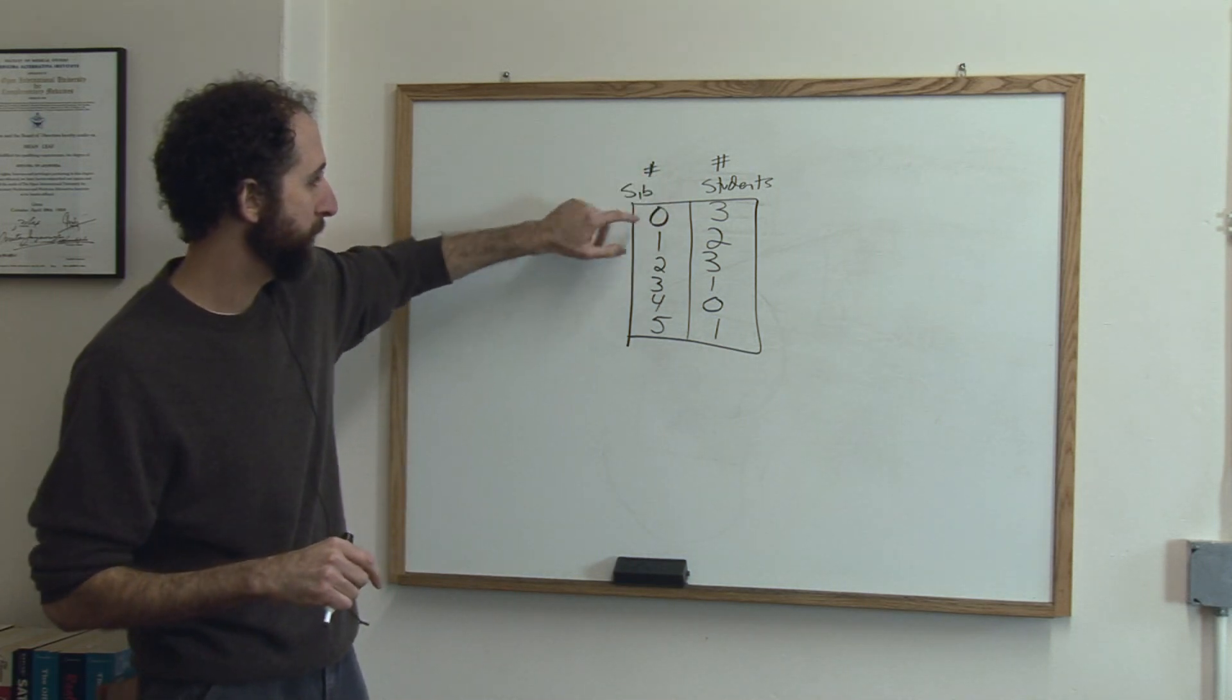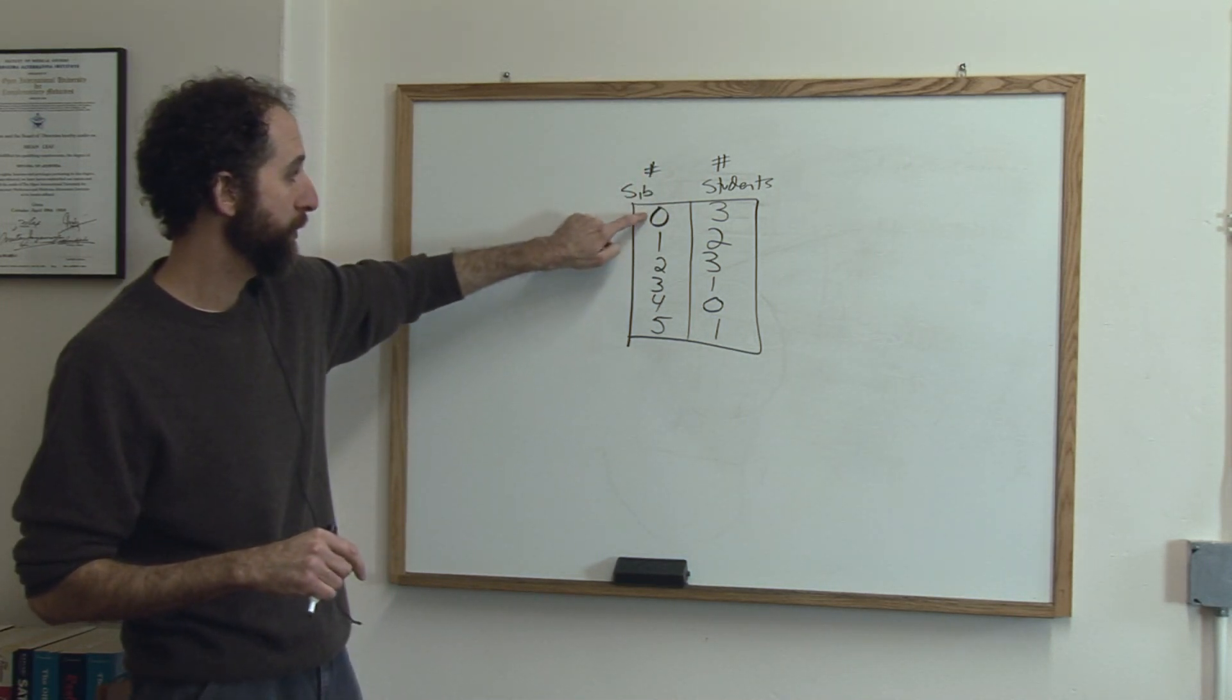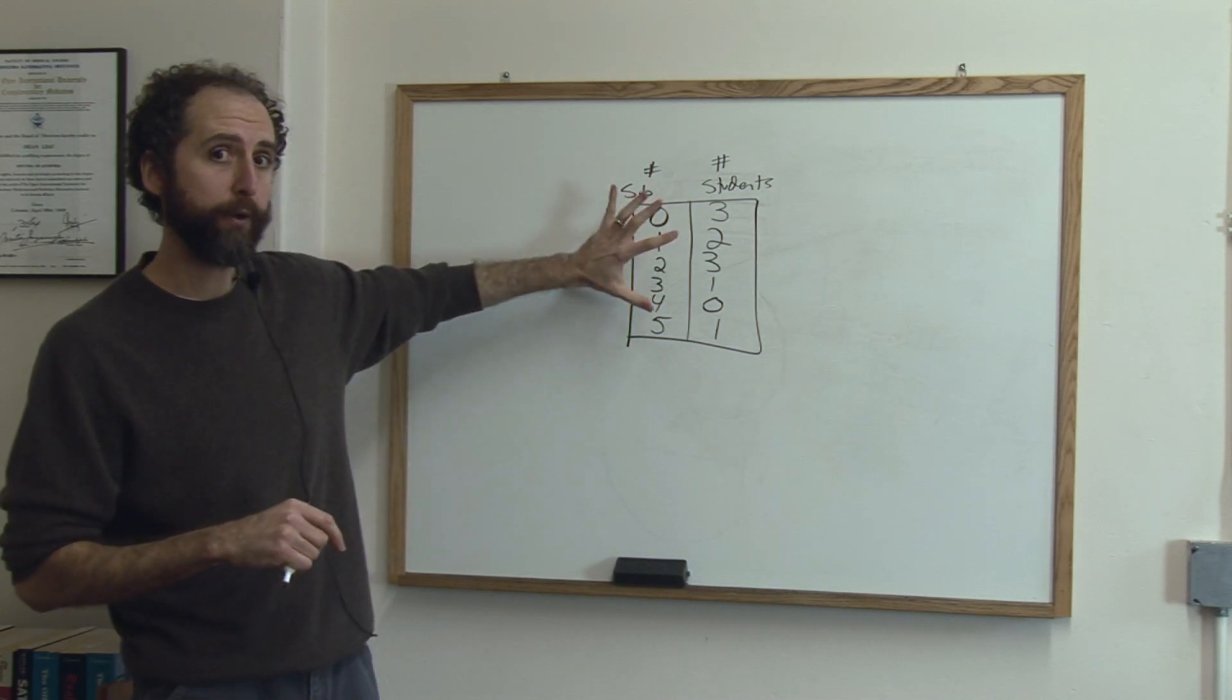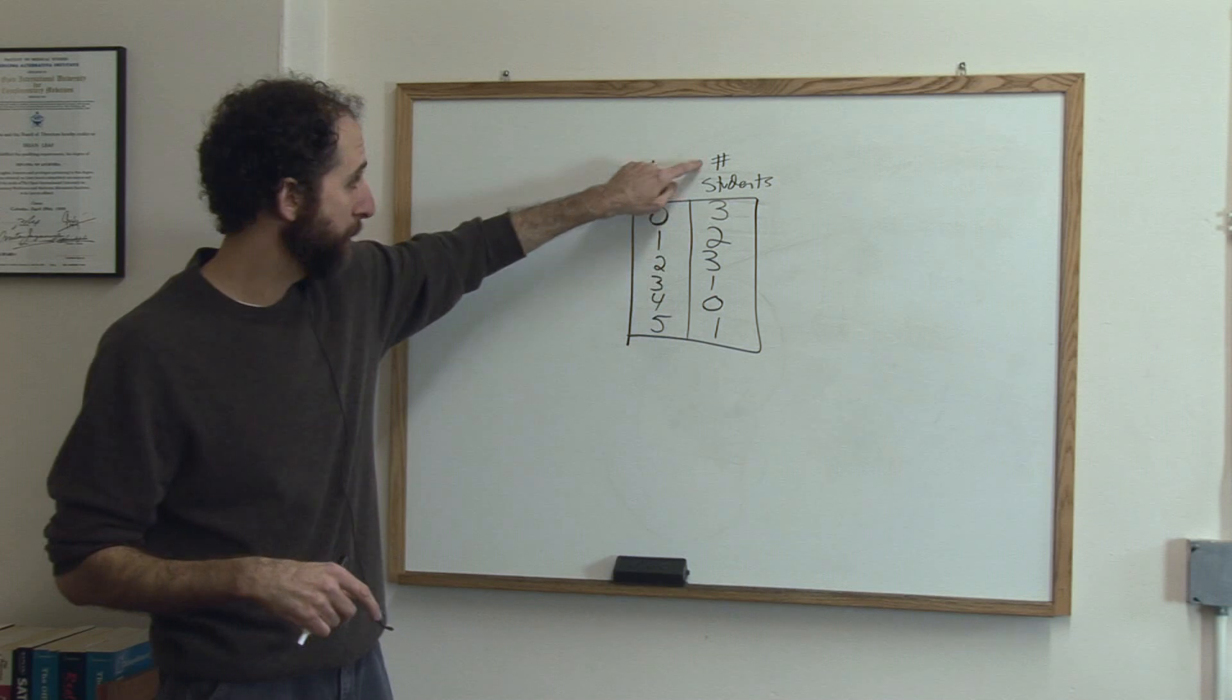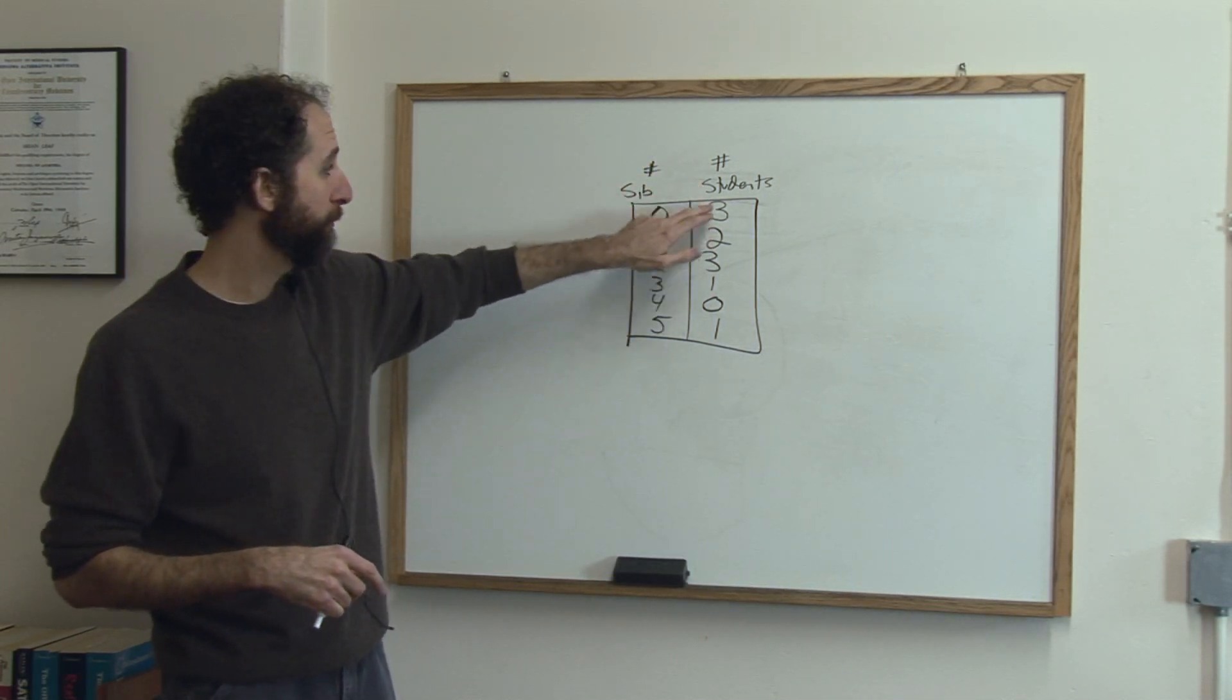Once again, this tells me that in this category of zero siblings, one, two, three, four or five siblings, that's the category. And this tells me the frequency, that's what that word means, or number of people in the room who fit that category.